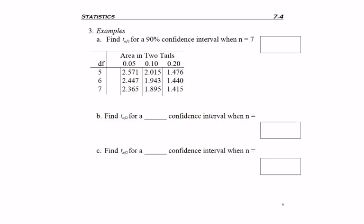So notice up top, there's actually two rows, the one that's area for two tails and the one that's area for one tail. But we already mentioned that confidence intervals are always two tail.